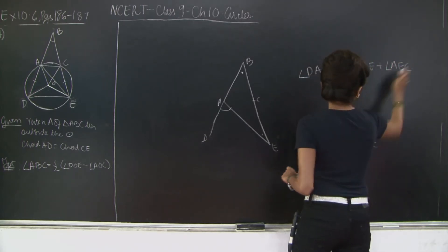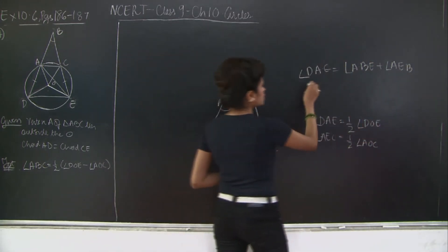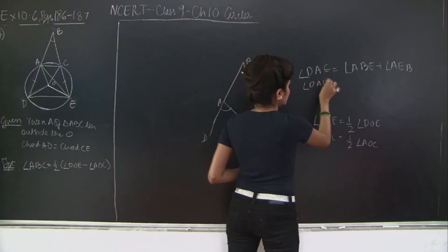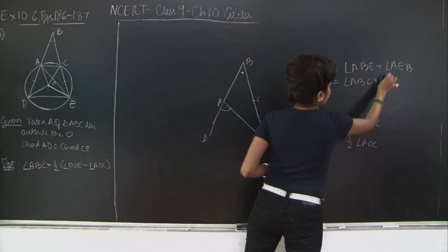But instead of ABE I can write ABC. So I have angle DAE is equal to angle ABC plus AEC.